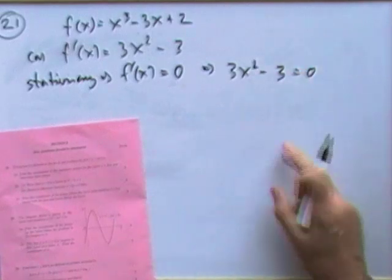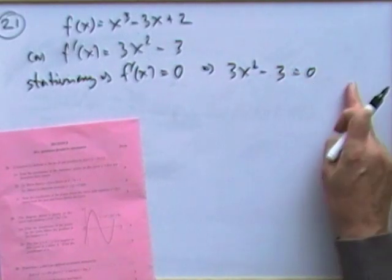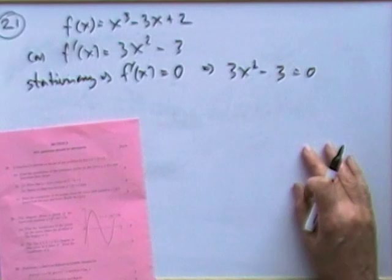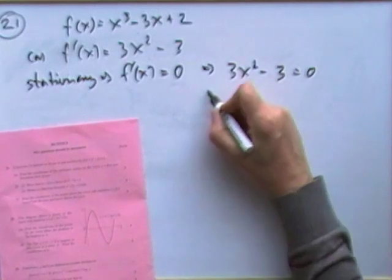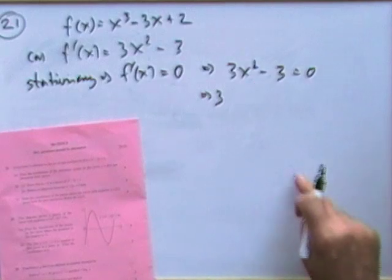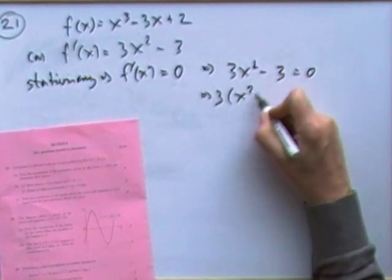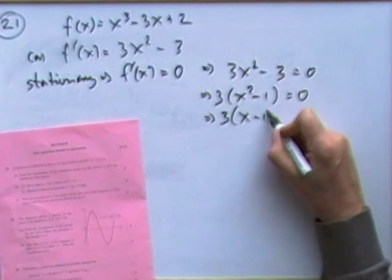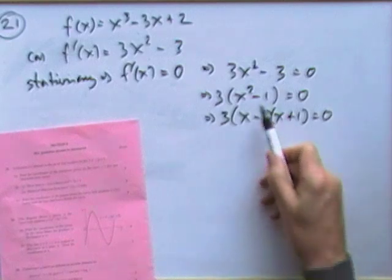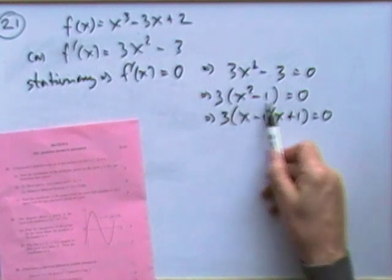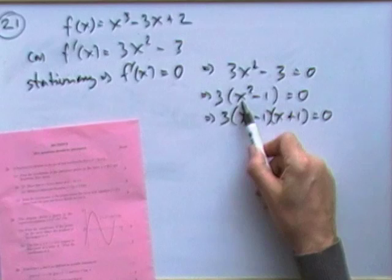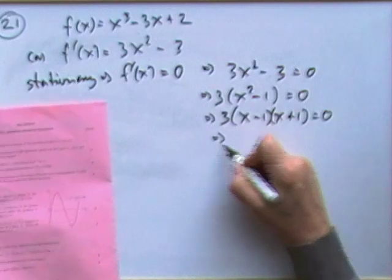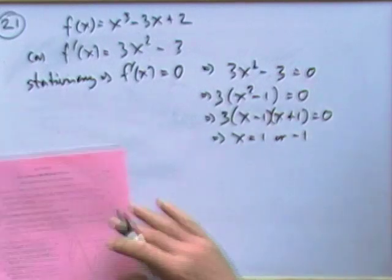Which means that 3x squared minus 3 has to equal 0. Now there's two ways to proceed from there - there's only one mention of x, so you could just solve it for x, take the 3 over, divide by the 3 and take the square root, remembering there'll be two answers, or you could factorize it. I think I'll go for the factorization, so I'll make that 3 times x squared minus 1 equals 0. Then difference of two squares: x minus 1, x plus 1. From that I get my two answers, x either equals 1 or negative 1.